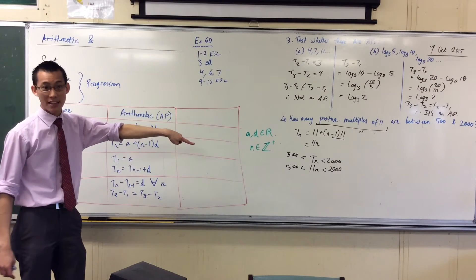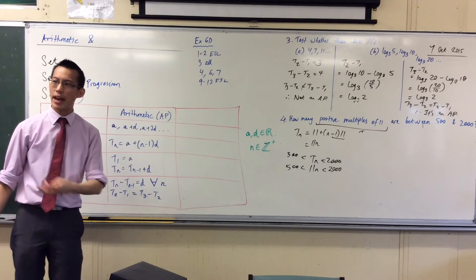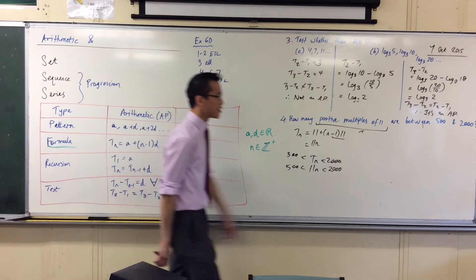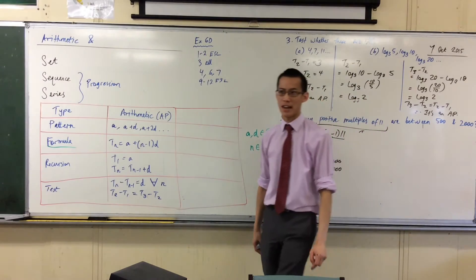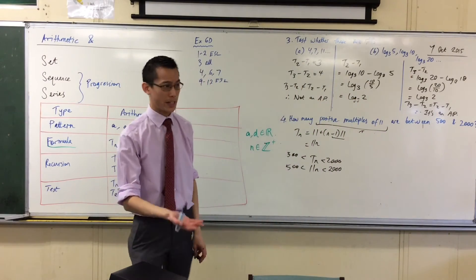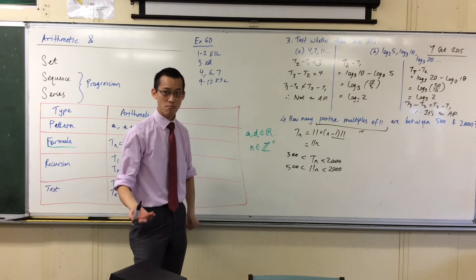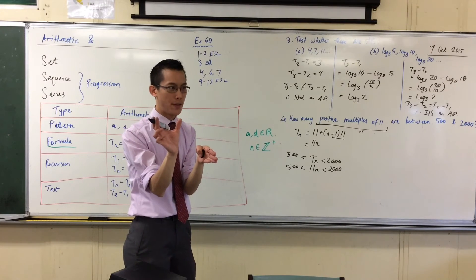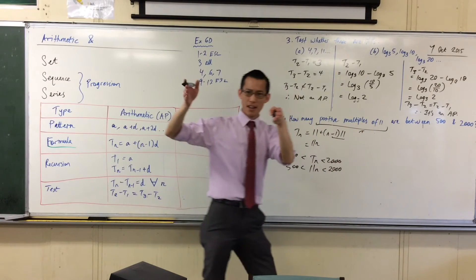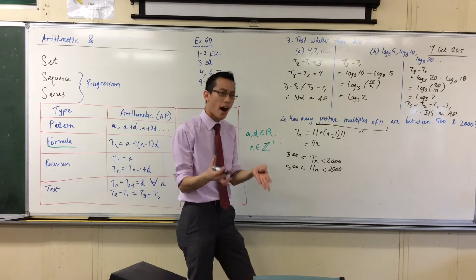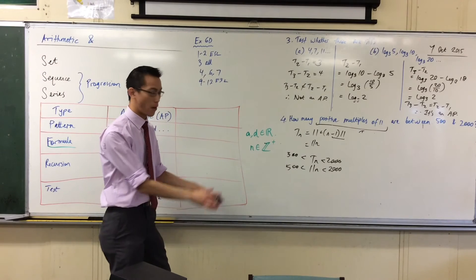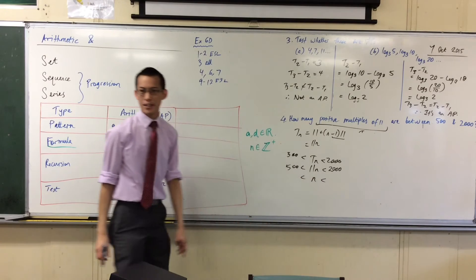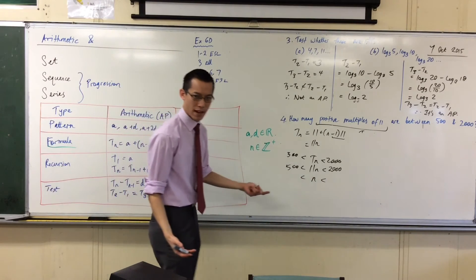Now before I go ahead and solve, what does your intuition tell you about how many answers roughly you're expecting? 2000 take away 500 is 1500. Dividing by 11 is awkward but a number that's close to that which I can easily divide by is 10. Now how many multiples of 10 are there in 1500? About 150. Now this is multiples of 11, they come out just a little less frequently so I'm going to probably expect a bit under 150. That's what my intuition is telling me. So I'm just going to divide by 11. What am I going to get? I'm going to get mixed numerals again. What have I got? 45.